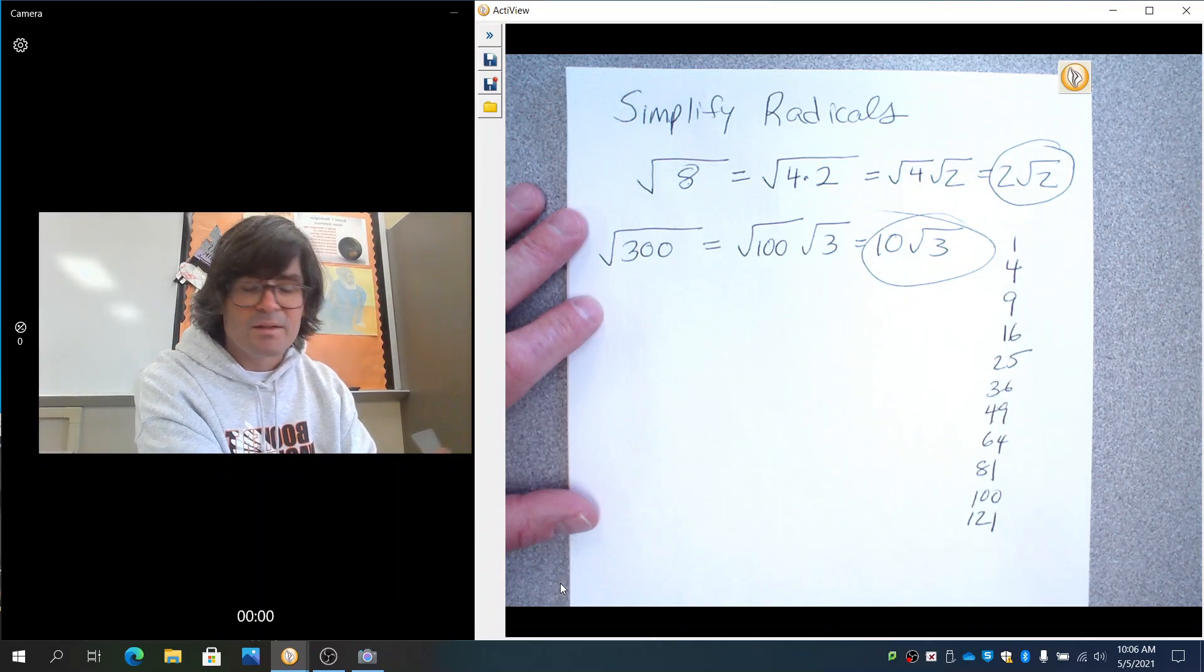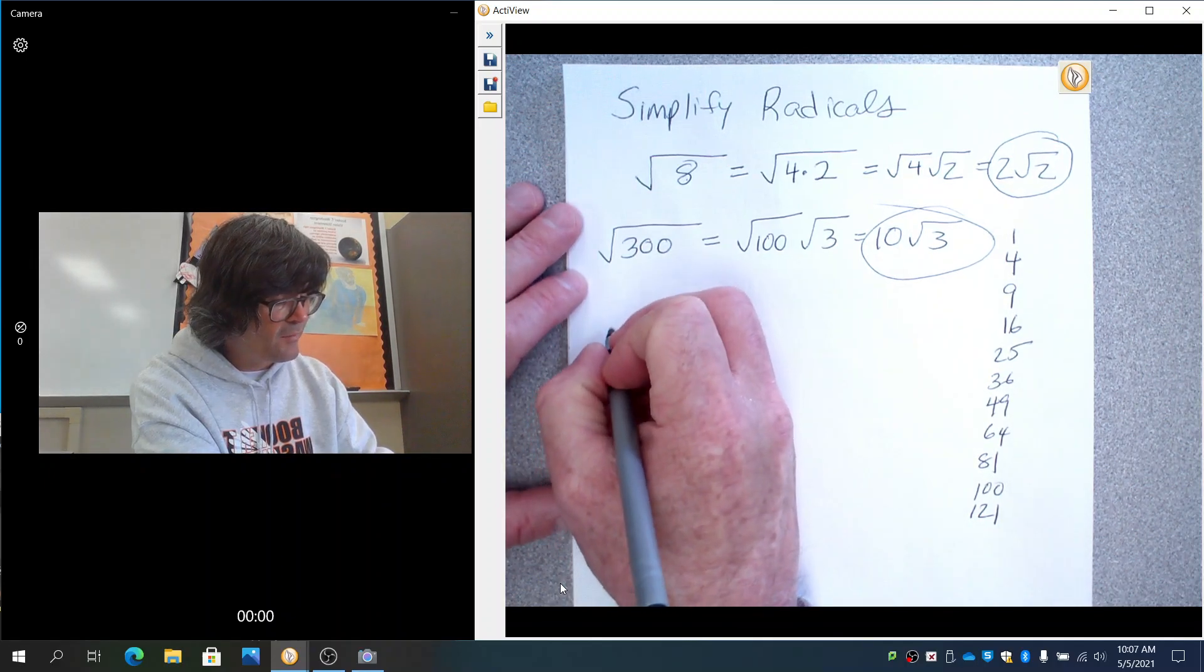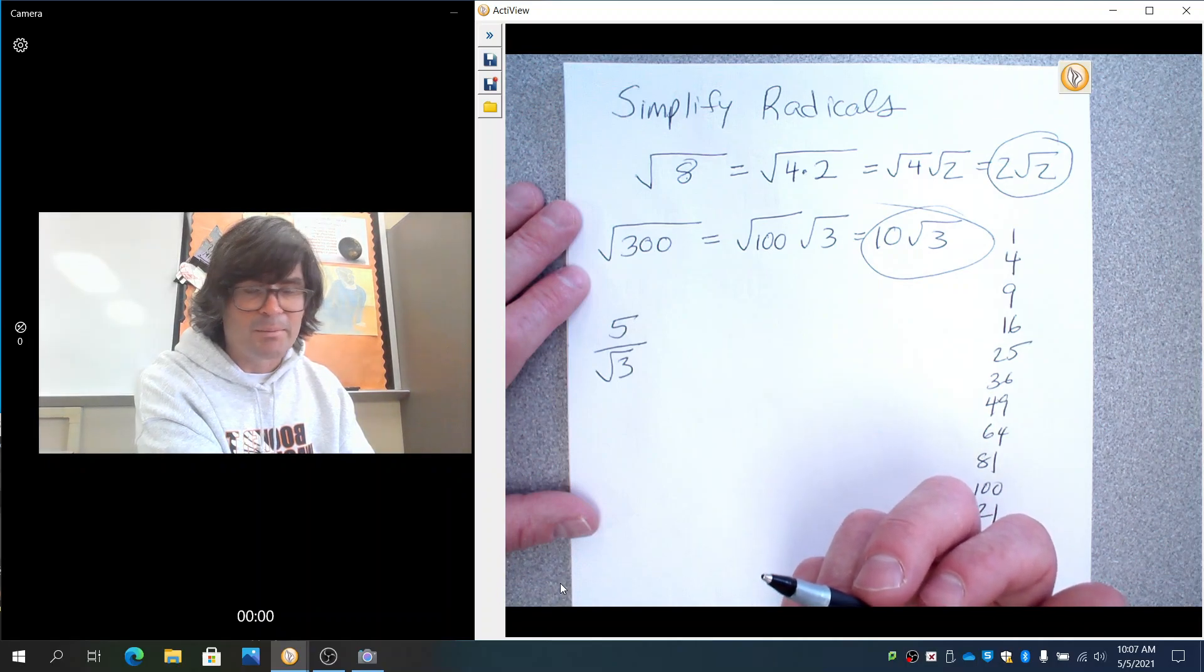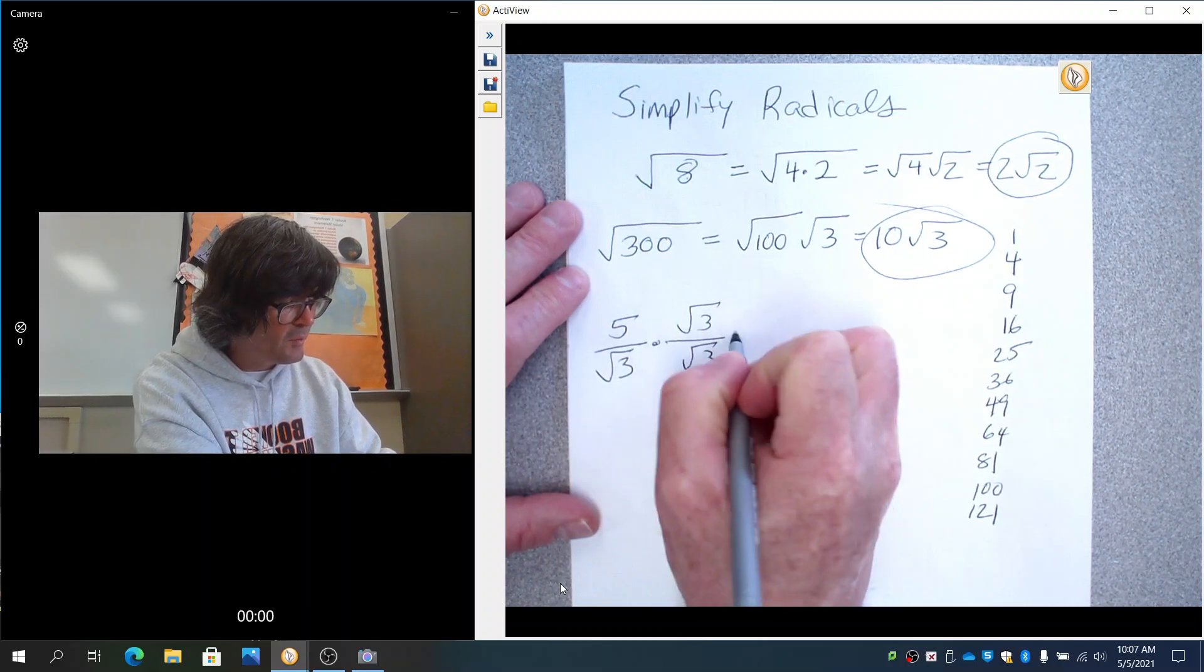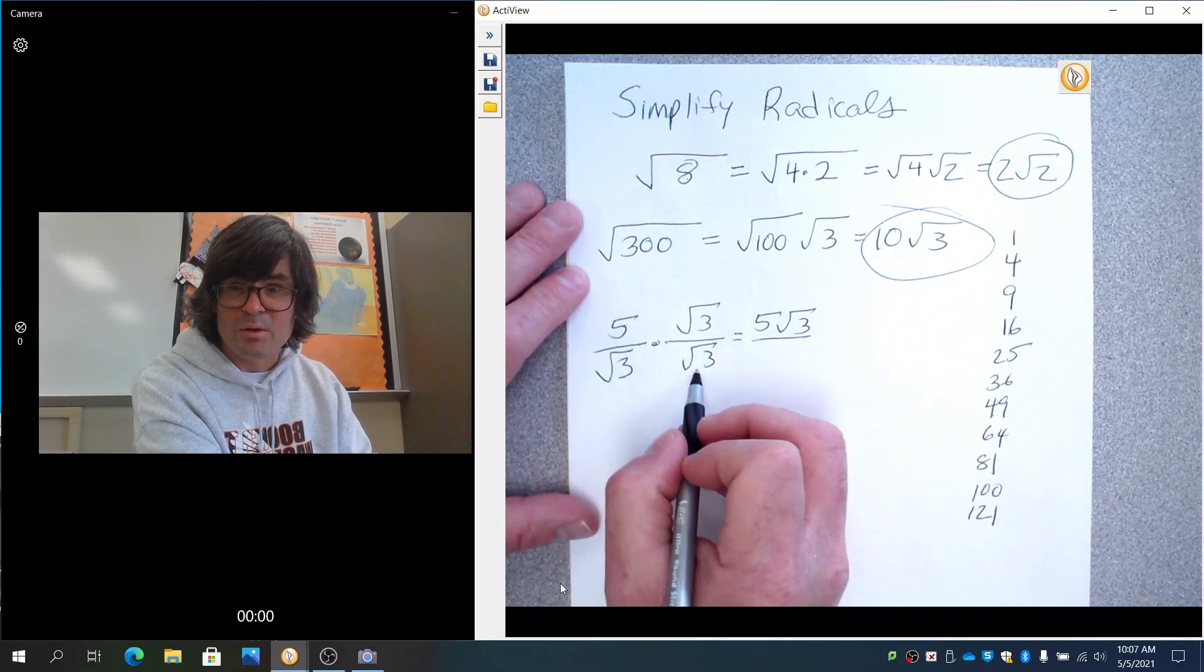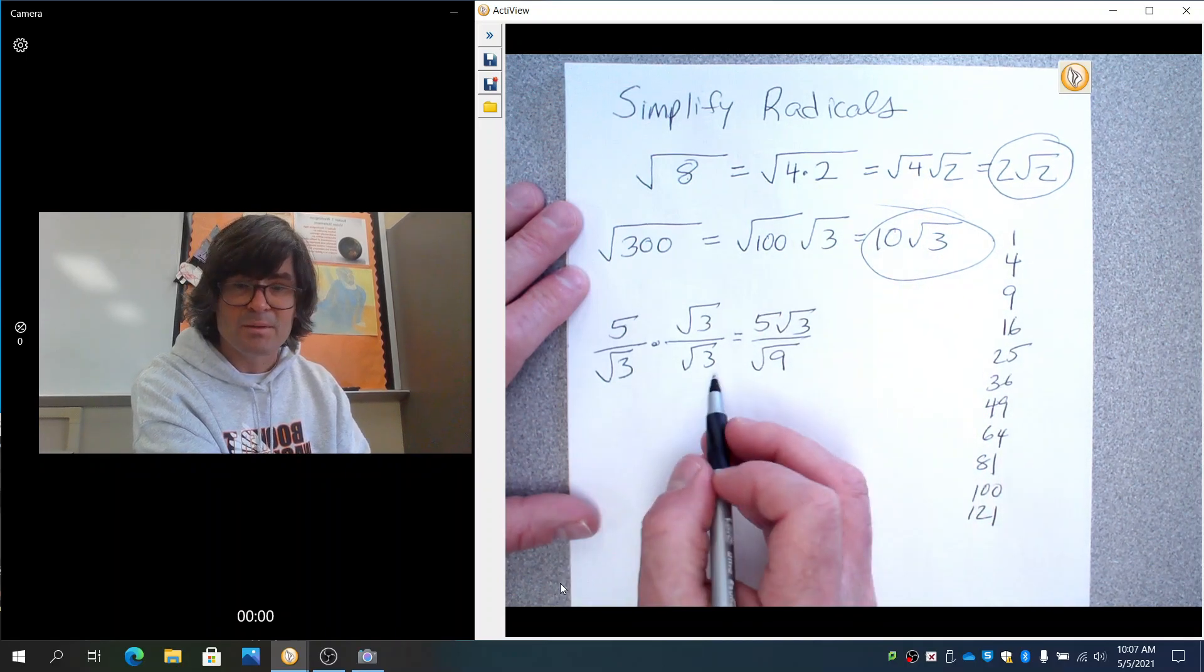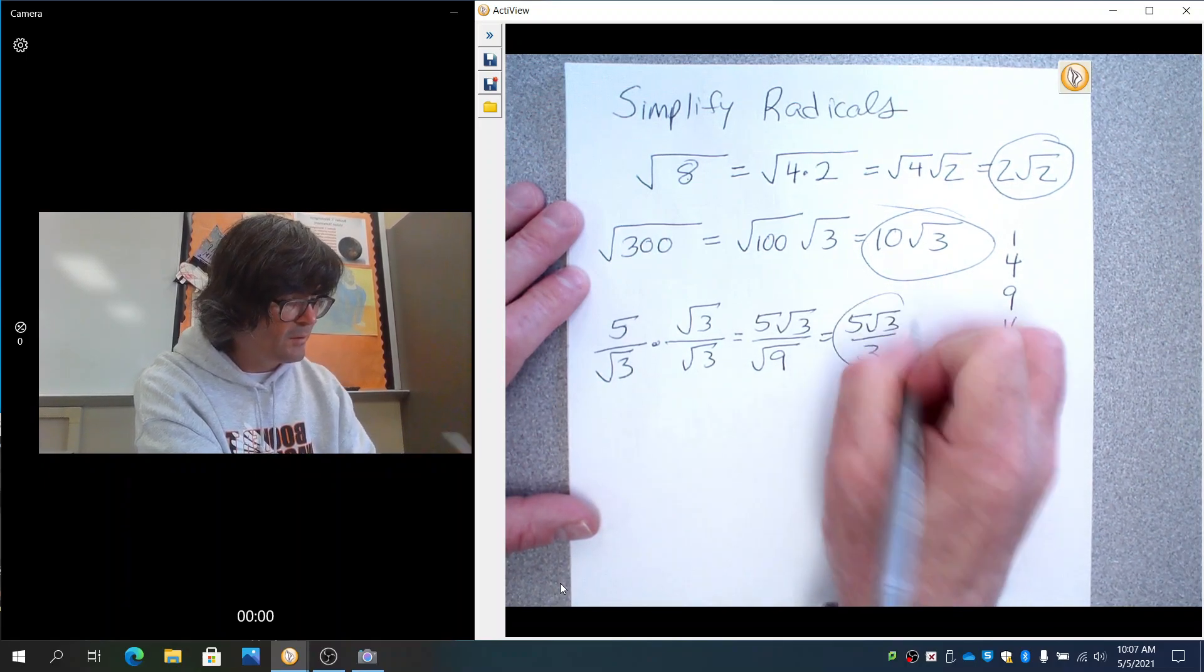If you have a square root in the bottom, say 5 over the square root of 3, the way you simplify that—we typically don't like to have the radical in the bottom of the fraction—you would multiply by root 3 over root 3. This becomes 5 root 3. And then the bottom is the square root of 9, since 3 times 3 is 9. That becomes 5 roots of 3 over 3.